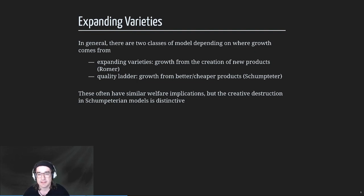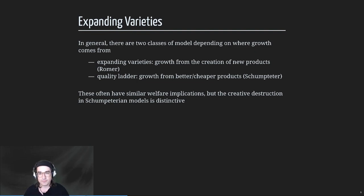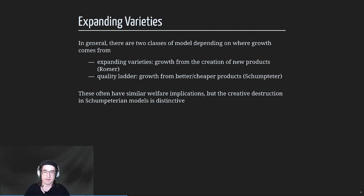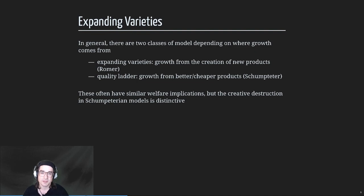You can get scope for inefficiencies in either of these models. With Ramsey, basically everything we did was efficient - certain forays like the climate model would lead to inefficient outcomes in a laissez-faire setting, but for the most part things were efficient with no externalities. Here we're going to have externalities and potential for inefficiencies. In the Schumpeterian model, you don't really care in some sense about the old producer you've displaced - you're not internalizing that externality.